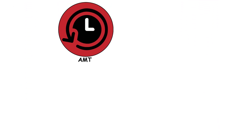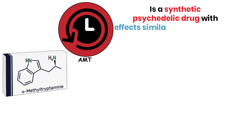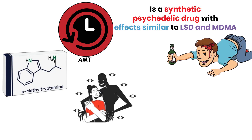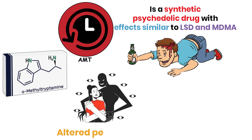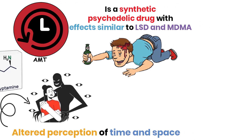AMT, or alpha-methyltryptamine, is a synthetic psychedelic drug with effects similar to LSD and MDMA. It can cause hallucinations, euphoria, and an altered perception of time and space, but it is less commonly used than other hallucinogens.